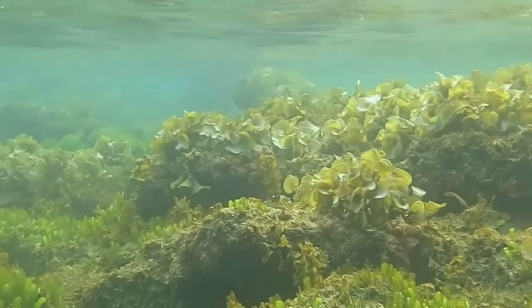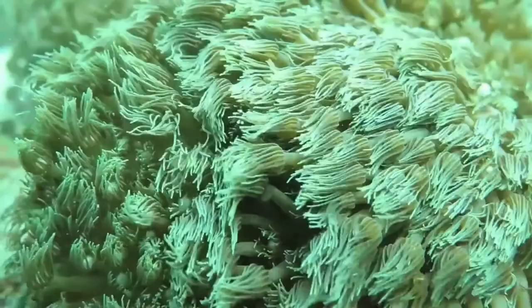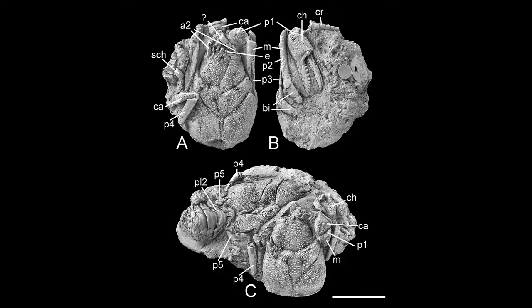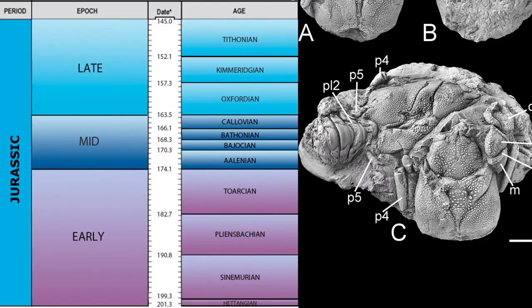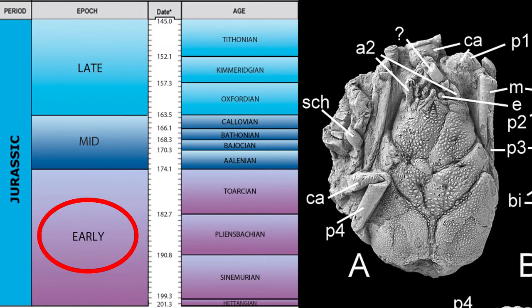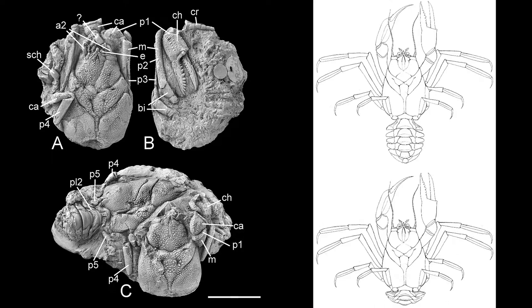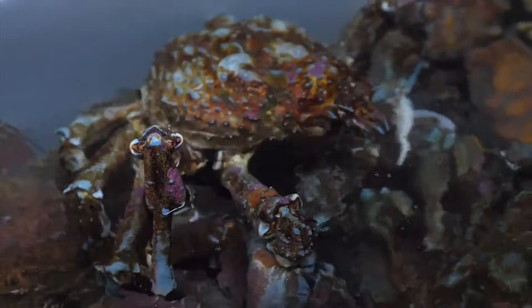Crabs are decapod crustaceans of the infraorder Brachyura, with approximately 7,000 species in 98 families. The earliest unambiguous crab fossils date from the early Jurassic, with the oldest being Eocarcinus from the early Pliensbachian. It likely represents a stem-group lineage, as it lacks several key morphological features that define modern crabs.